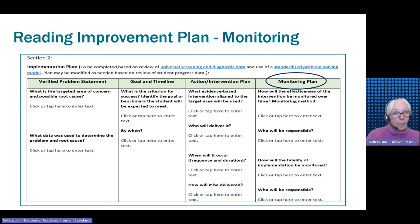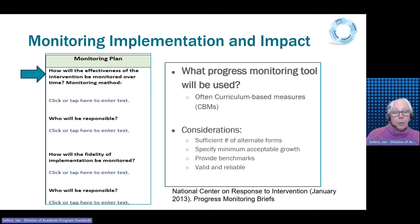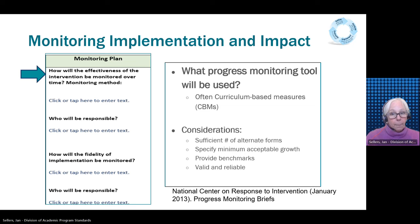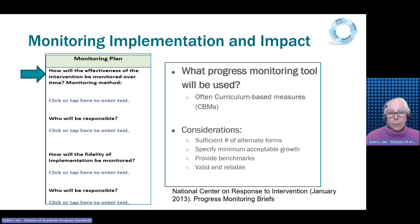The final step is to determine how the intervention will be monitored for effectiveness and fidelity of implementation. The monitoring component is where the team determines how they will know if the intervention is having the desired impact on the student's reading proficiency. Curriculum-based measures are often used because they are short, skill-based assessments sensitive to change — they offer a snapshot of student learning and measure growth over a set period of time. Key considerations in selecting a progress monitoring tool include whether there is a sufficient number of alternate forms, whether it specifies minimum acceptable growth, whether it provides benchmarks, and whether it possesses validity and reliability for the performance score.